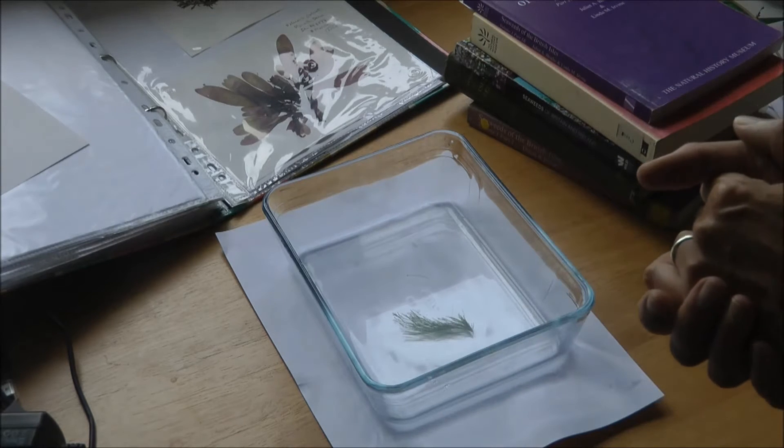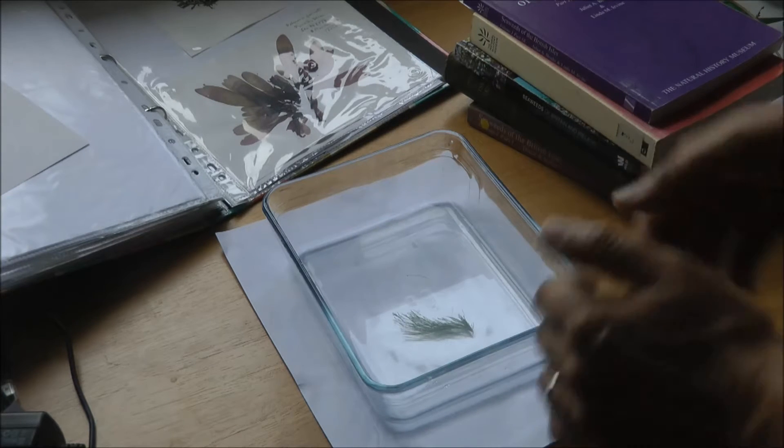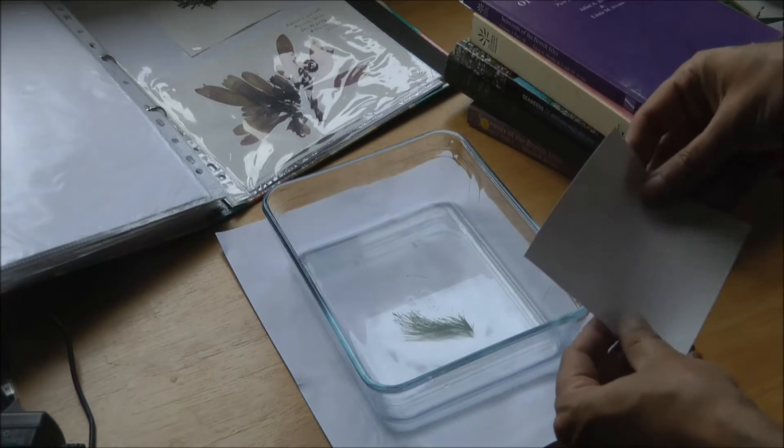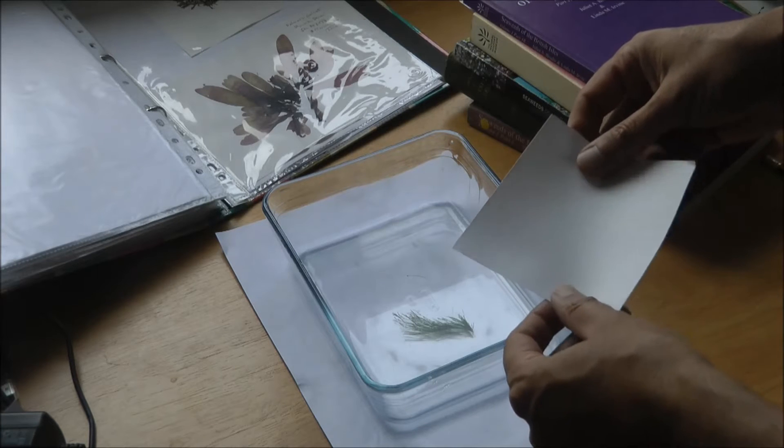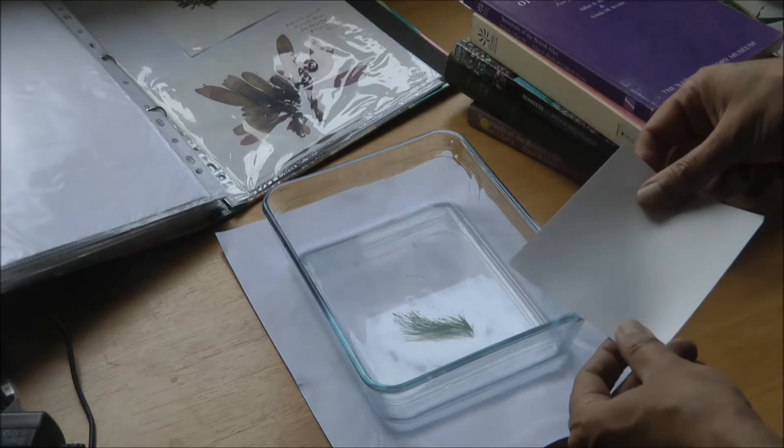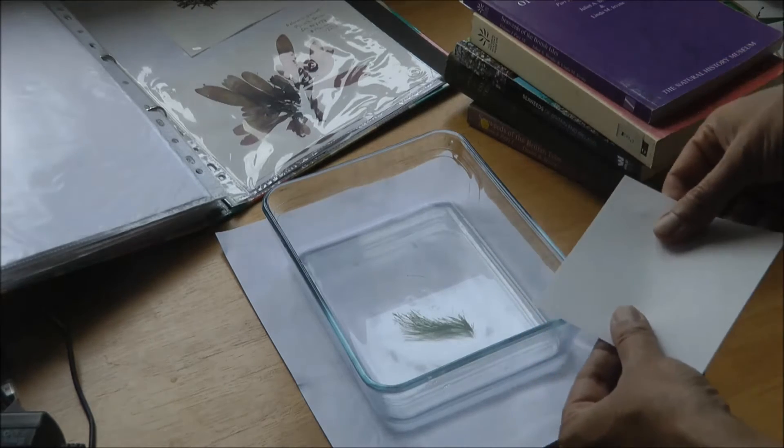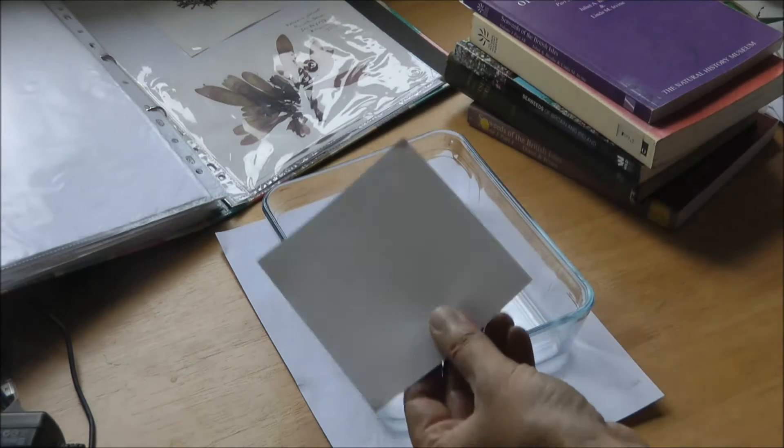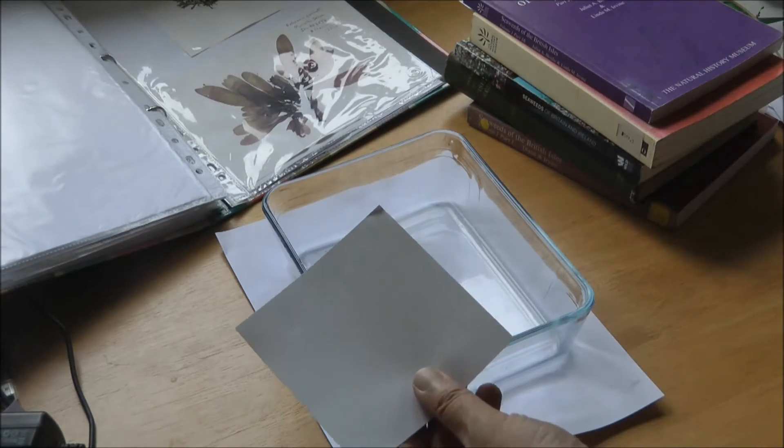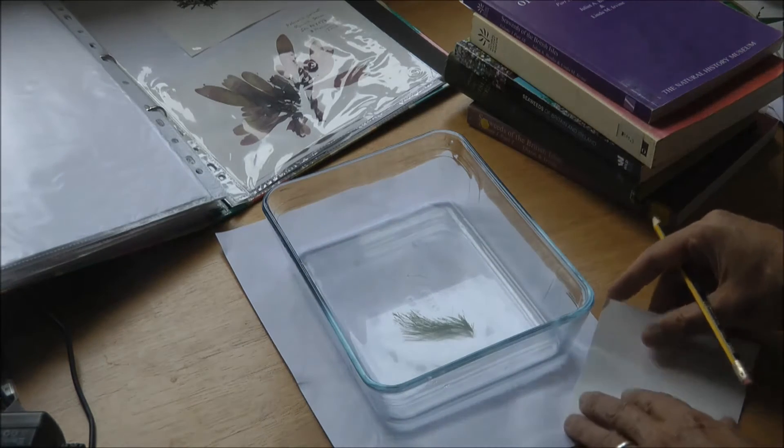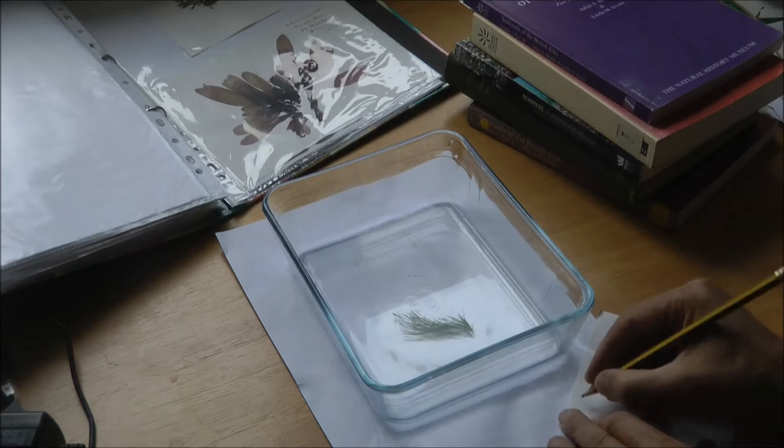Okay, now we need some paper. This is slightly thicker paper than your normal 80 GSM stuff that you get into photocopiers and printers. It's got a bit more rigidity, so a light cartridge paper or something. It's a really good idea to write on it before you put it in the water with a pencil so it doesn't run.